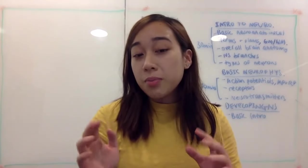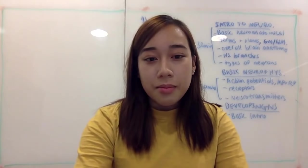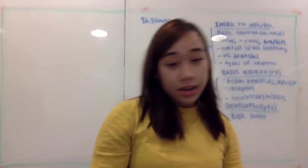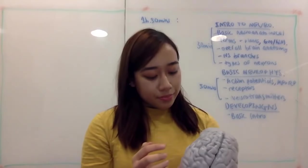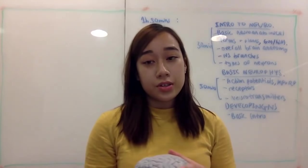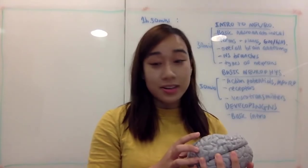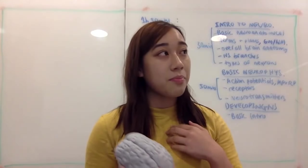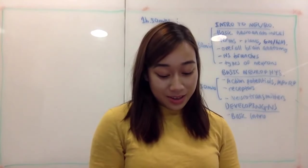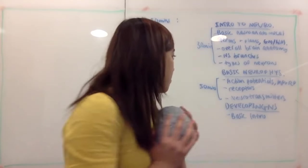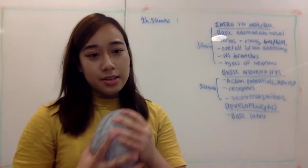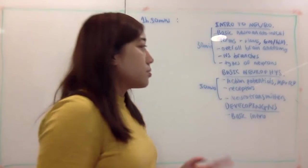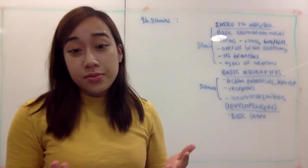I'm going to cover a few things outside of the textbook to help you understand how to piece everything together, so you can remember things better and it seems less like rote learning. I don't know how much you guys have covered on neuroanatomy, but the most I saw in the state round textbook was basic lobes of the brain. I have a really cool model I'm going to use today.